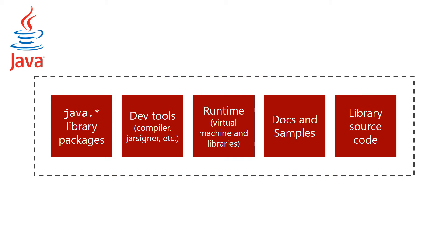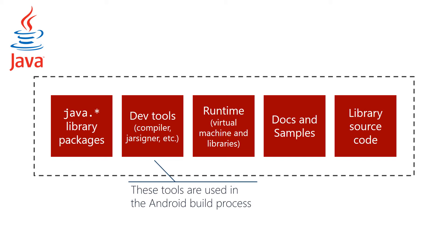You must have the Java JDK installed to compile Xamarin Android applications. Native Java apps are built using the tools and libraries from the Java SDK, but for Android applications some of the Java development tools are also used in the build process — and this is true both for Android applications written in Java and Xamarin Android apps.